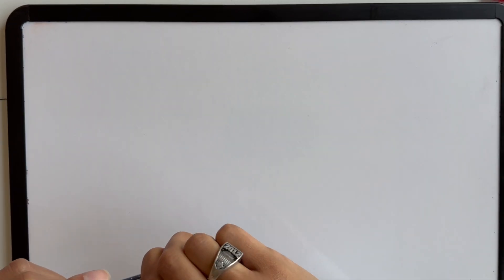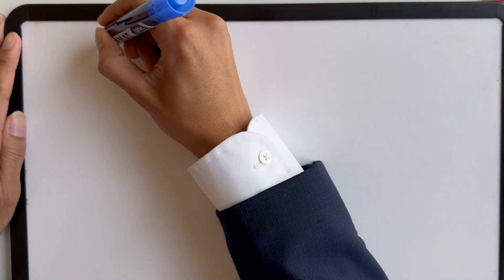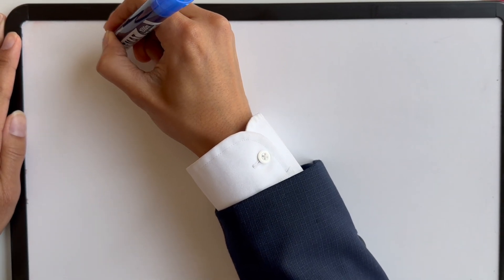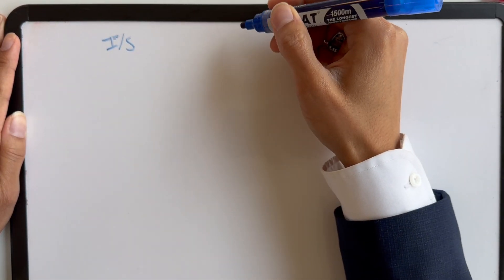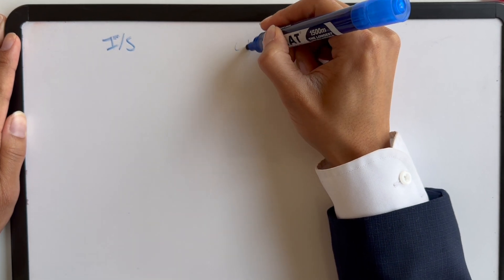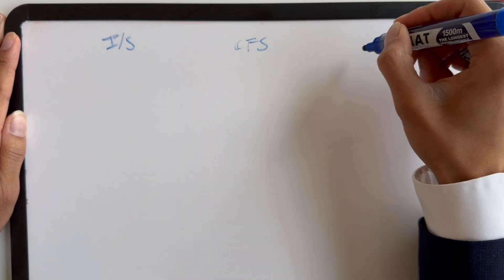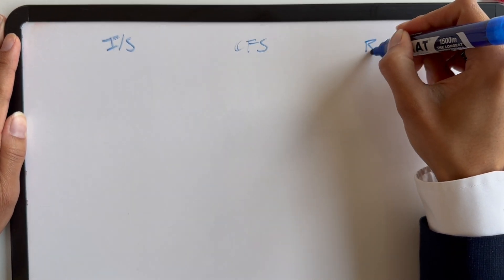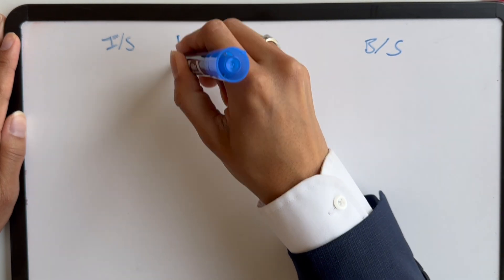The first thing we want to do is lay out our three financial statements — like usual: the income statement, the cash flow statement, and then the balance sheet.